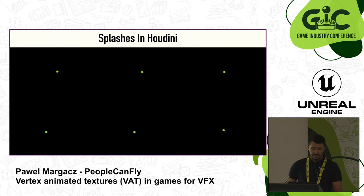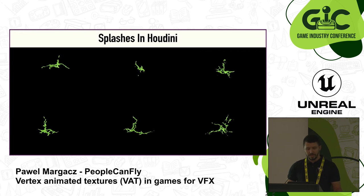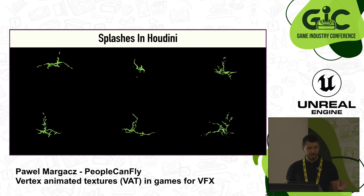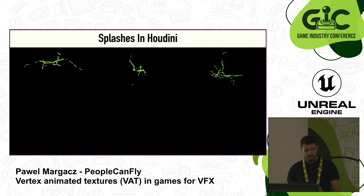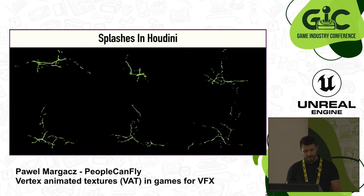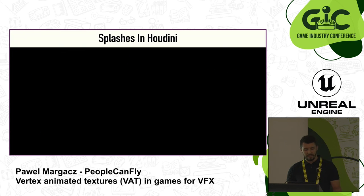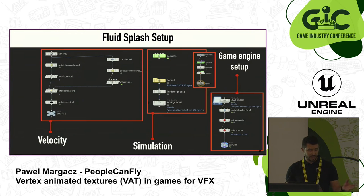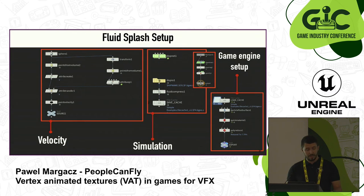Another VAT technique is dynamic remeshing. Soft bodies were the first we looked into — they seem like the easiest method to start experimenting with. We then decided to create some splashes in Houdini using the dynamic remeshing method. We got a couple of simulations and wanted to recreate liquid-like behavior in the game engine. VATs were perfect for this, as we wanted the effect to be cheap on performance. We found splashes could be a good choice for various systems — water splashes, lava effects, any place requiring liquid-like behavior.